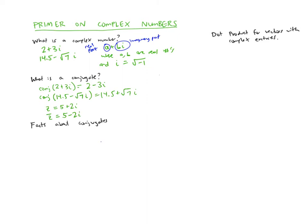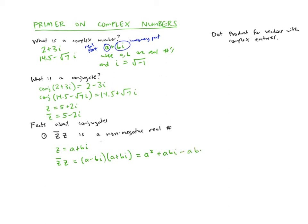There are a few facts we'll need about conjugates. One important fact is that if you multiply the conjugate of a complex number by the complex number itself, you get a non-negative real number. That's because if z = a + bi, then z-conjugate times z is (a − bi)(a + bi). Multiplying out gives a² + abi − abi − b²i². Since i² = −1, this simplifies to a² + b², which is real and greater than or equal to zero.